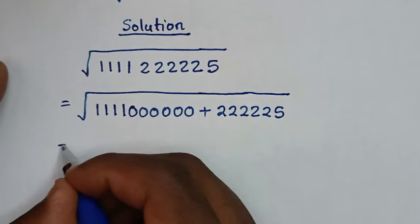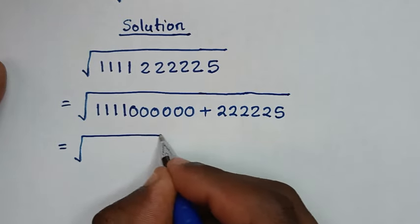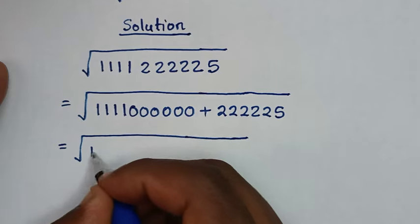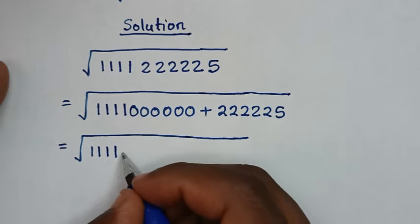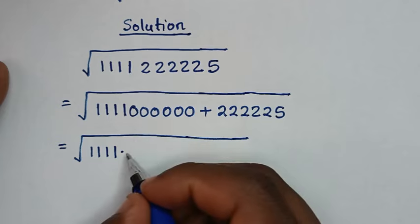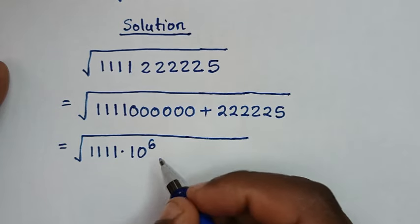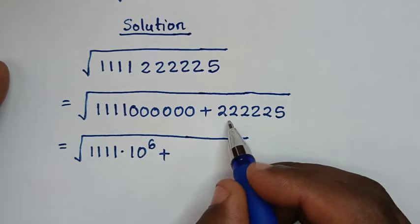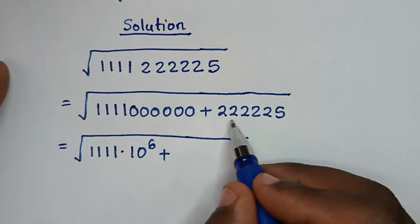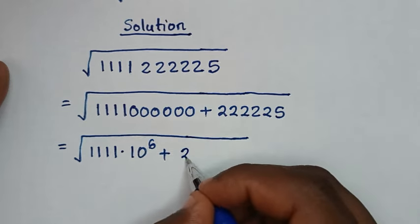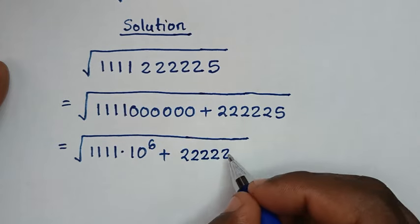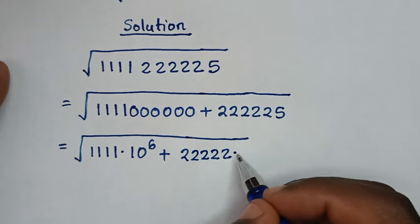Then in the next step, it will be equal to square root of 1s, we have 4. So, 1, 2, 3, 4. Then times 10 power of 6. Then plus 2s, we have these 2s — we have 5. So it's same as 2, 2, 2, 2, 2 — 5 twos — then times here.